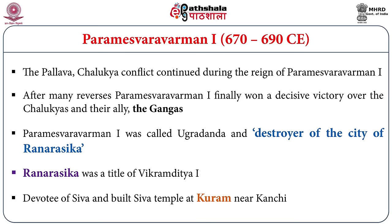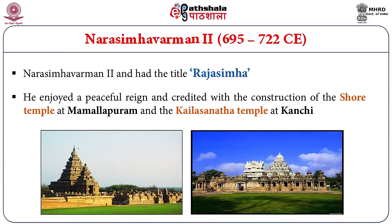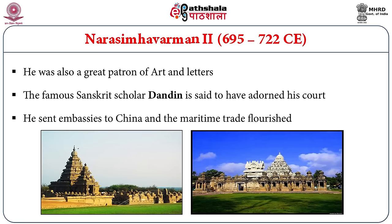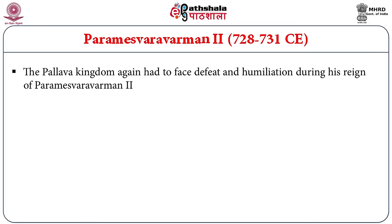The next important ruler of this family is Narsimha Varman II, also known as Rajasimha, who became familiar both in the political and cultural history of the Pallavas. He enjoyed a peaceful reign and is credited with the construction of the great Shore Temple at Mamallapuram and also the beautiful and magnificent Kailasanatha temple at Kanchi. He was also a great patron of art and letters; the famous Sanskrit scholar Dandini is said to have adorned his court. He also sent embassies to China for the promotion of maritime trade.